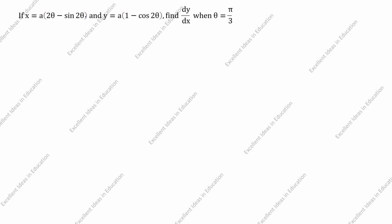Hi students, welcome to my channel Excellent Ideas in Education. Today we are going to solve this differentiation problem. If x is equal to a(2θ − sin2θ) and y is equal to a(1 − cos2θ), find dy/dx when θ is equal to π/3.